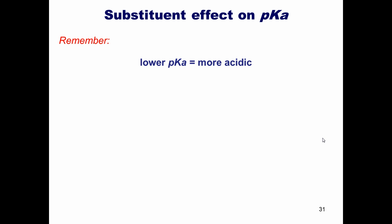Now let's look at these two examples. As you can see, the compound on the left has a lower pKa than the compound on the right. This means that the OH on the left is more acidic than the OH on the right. Why do you think that is?